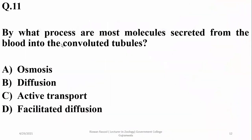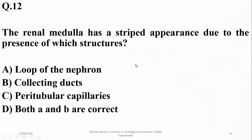Question number eleven: by what process are most molecules secreted from the blood into the convoluted tubule? It is called active transport — molecules are actively secreted from the blood into the lumen of the nephron, such as hydrogen ions.